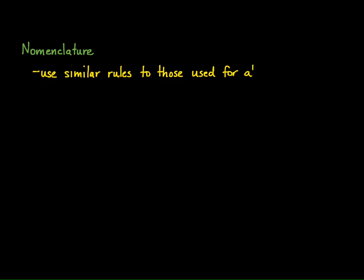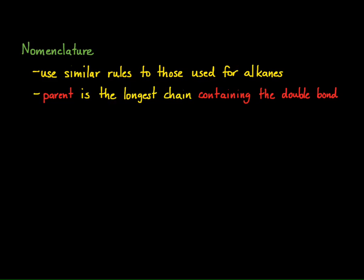Just like with alkanes, we have very similar rules that we're going to apply when using alkenes. And so essentially, the rules are going to be the same with a little modification. The first modification is that when we're looking at the parent chain, it's the longest chain that contains the double bond. So you have to include that double bond in figuring out what the longest continuous carbon chain is.